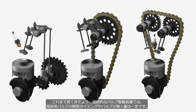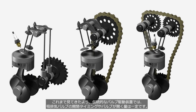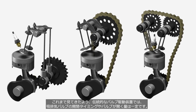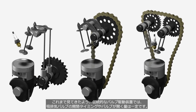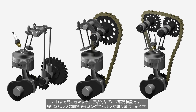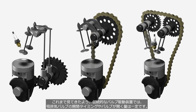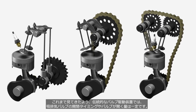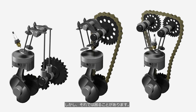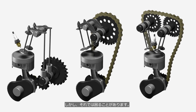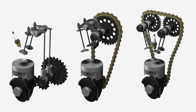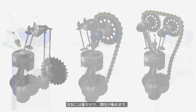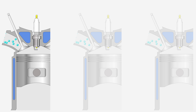As we have seen so far, in traditional valvetrain systems, the timing of the opening and closing of the intake and exhaust valves, as well as the amount the valves open, are fixed. However, this can cause problems. Air has weight and is subject to inertia. Still air cannot start moving suddenly, and moving air cannot stop abruptly.